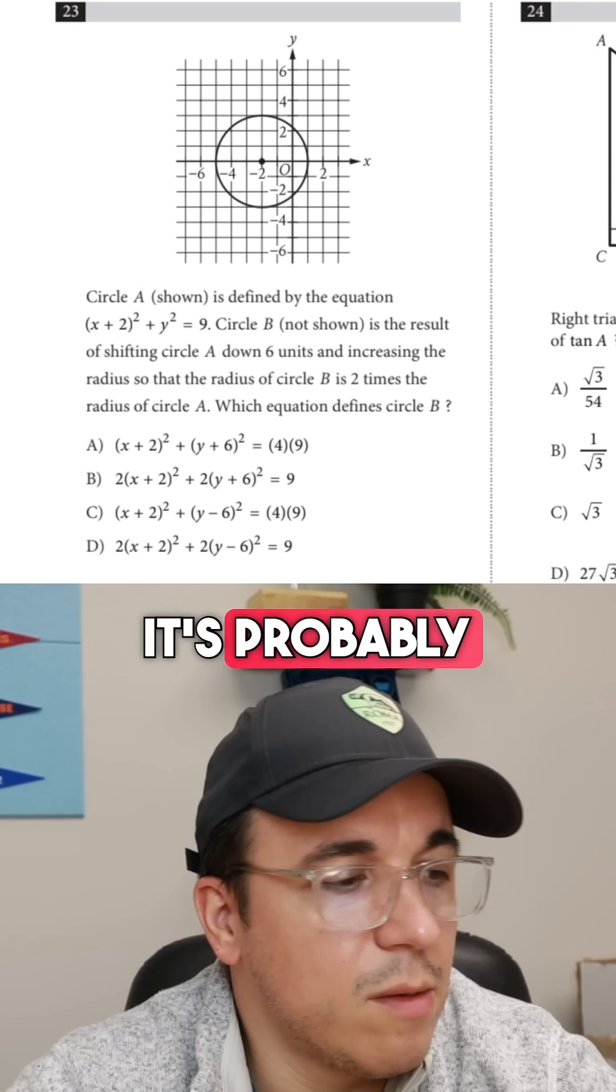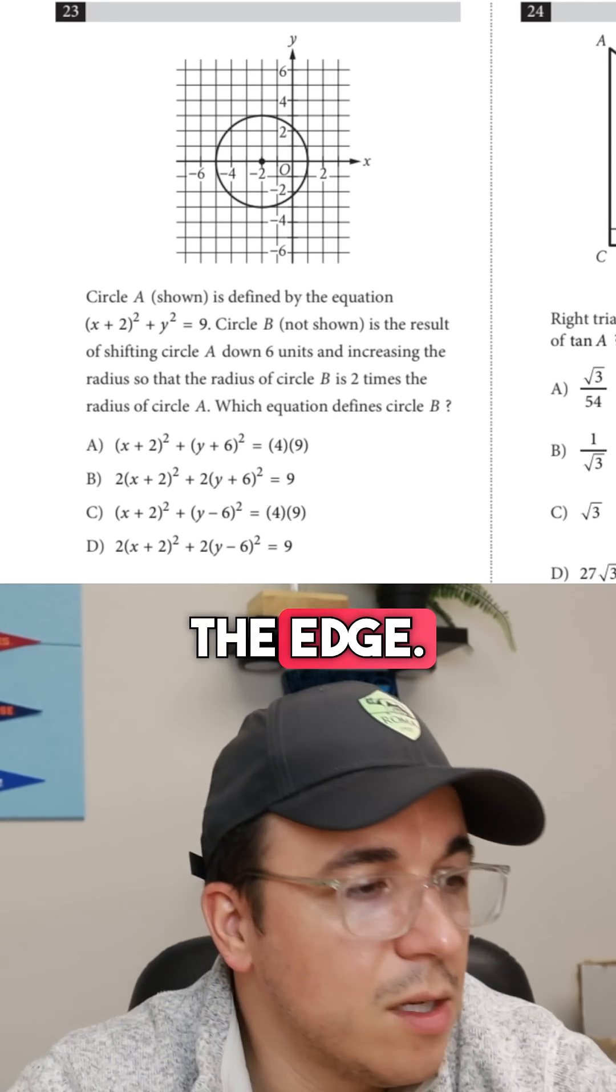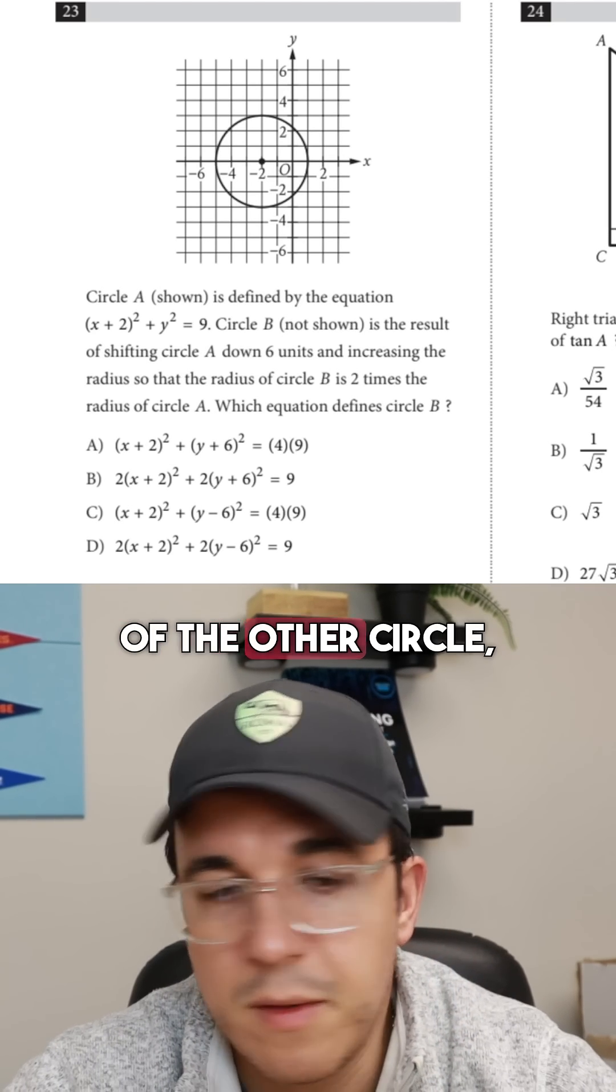So let's start with the radius part. It's probably easier. The radius of this circle is 3. You can see where the center goes to the edge. So the other radius of the other circle, circle B, is going to be 6.